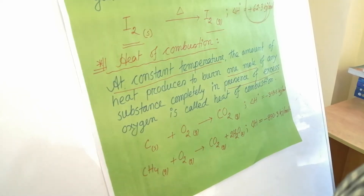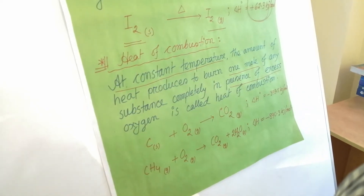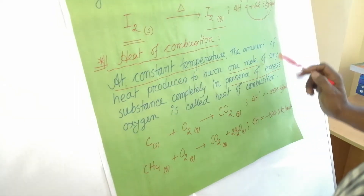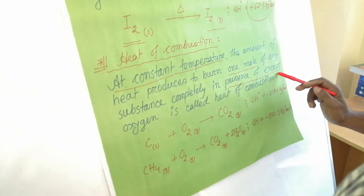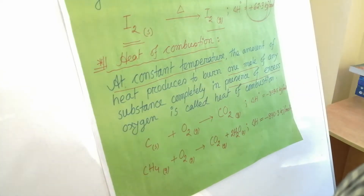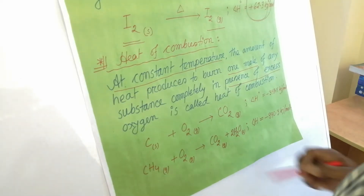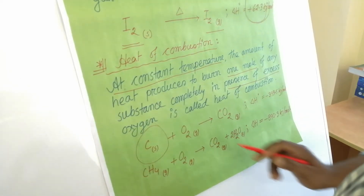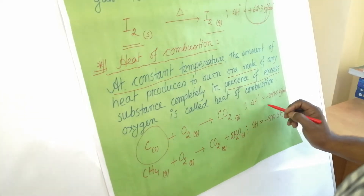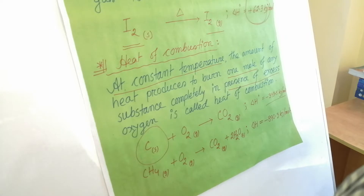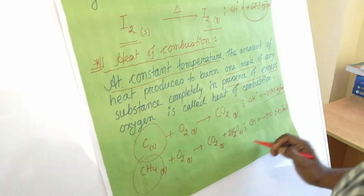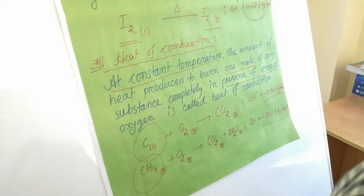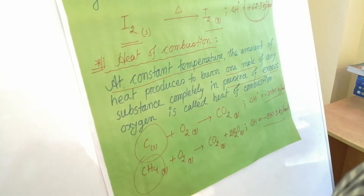The heat required to burn one mole of any substance completely in the presence of excess oxygen is called heat of combustion. For example, when we burn carbon, we produce heat of minus 393.5 kJ per mole. When we burn methane gas, we produce heat of minus 890.3 kJ per mole.